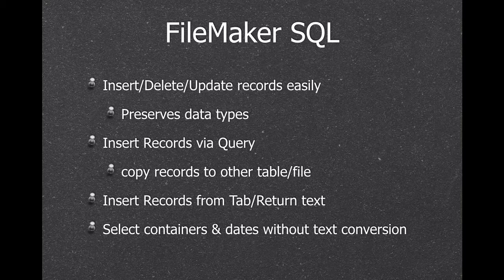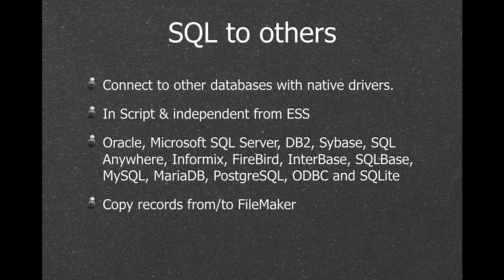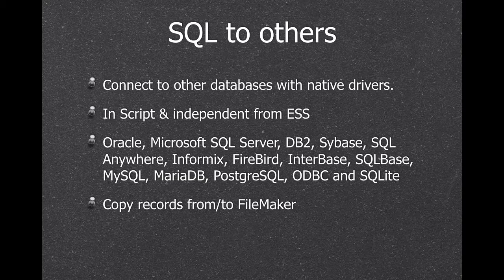We can run SELECTs and get containers and dates without converting to text, which we want to avoid. You can also connect to other databases — while FileMaker ESS supports a few, we support many more. We can bypass ODBC for MySQL, Microsoft SQL, PostgreSQL, and others by going directly over the native client to the database, which avoids several ODBC-related problems.